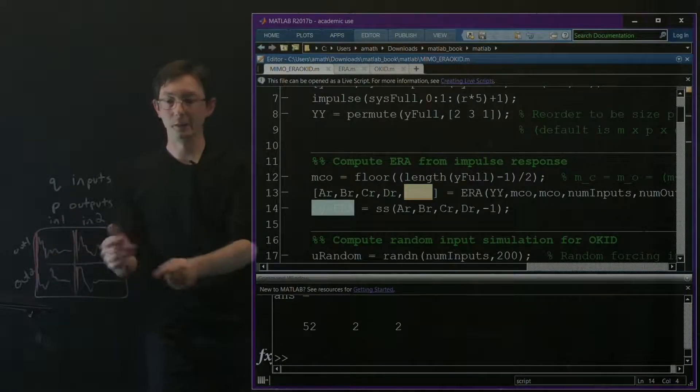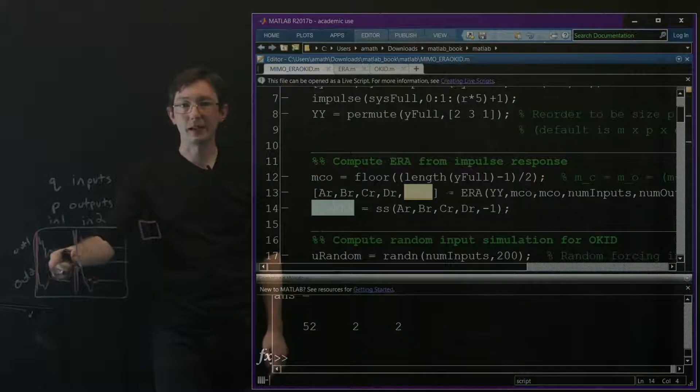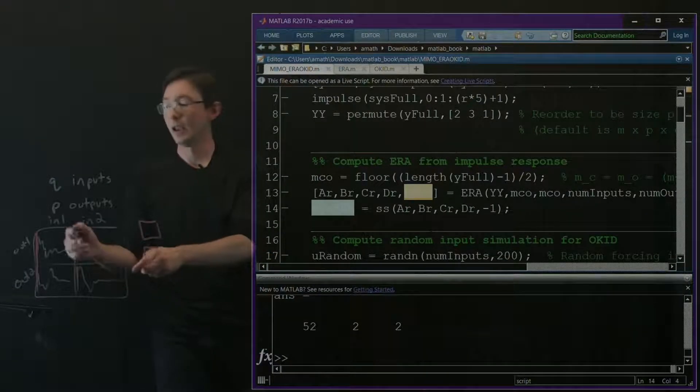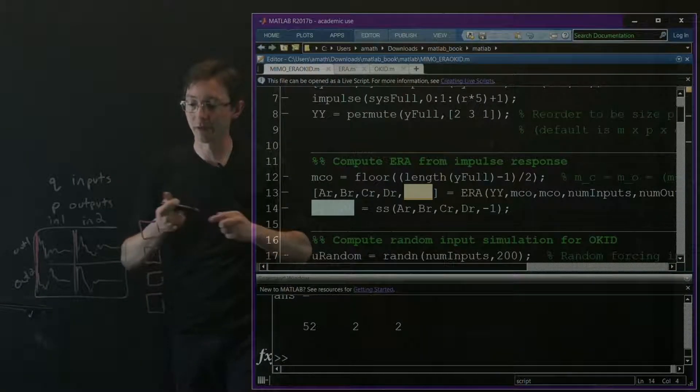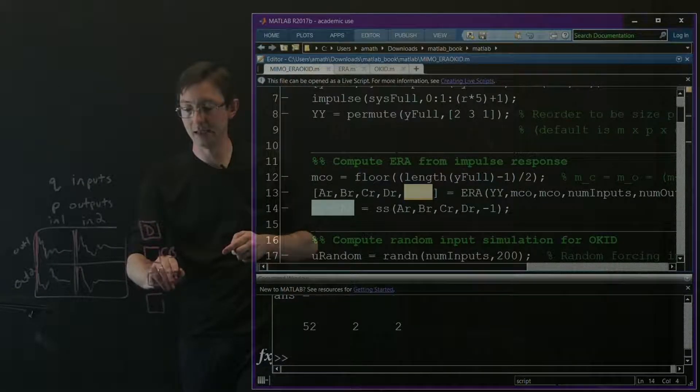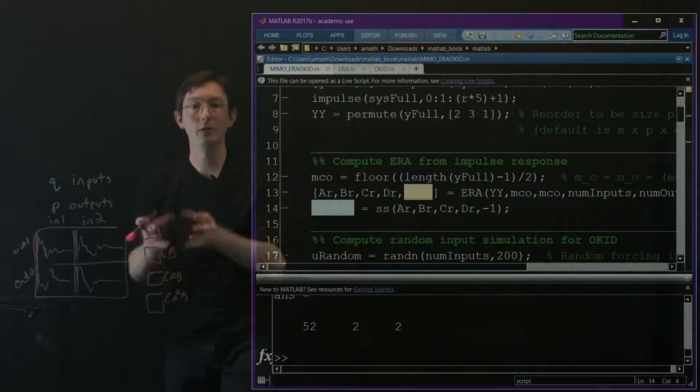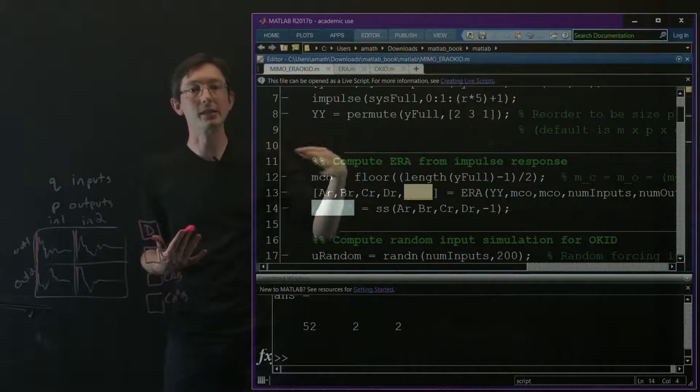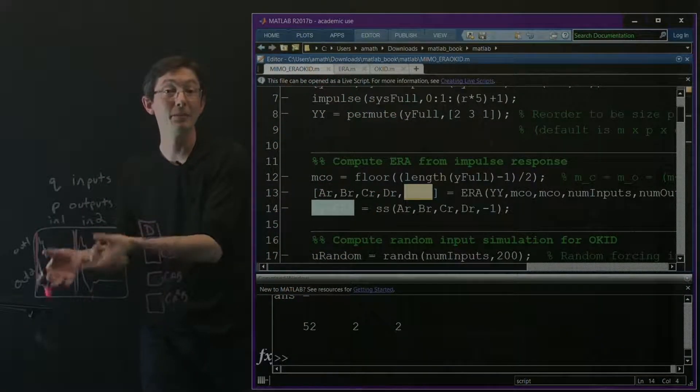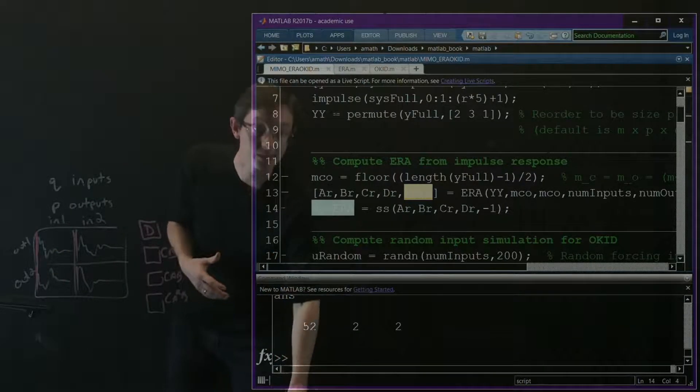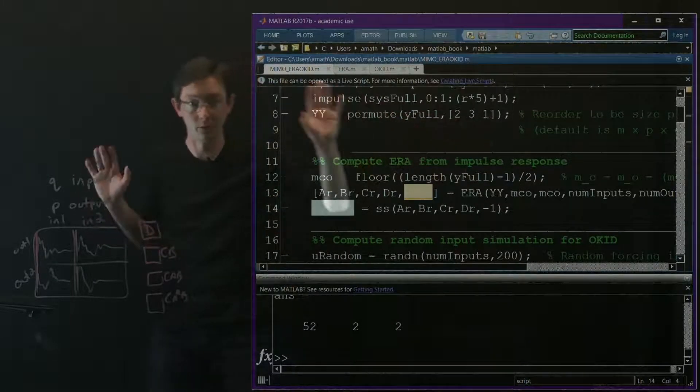What this reshaping is doing: at time step one, I take that measurement and reshape it into a little two by two matrix - my first block. At time step two, I take all four measurements and reshape them into a block. At time step three, I reshape those into a two by two block. These are those matrices from before - this is my D matrix, this is CB, this is CAB, this is CA²B. I'm reshaping my four impulse responses into this evolving two by two matrix. That's an important step in ERA or OKID - figuring out how to manipulate your data into the right structure. I probably spent 30 minutes or an hour figuring out the right way to write this one line of code.